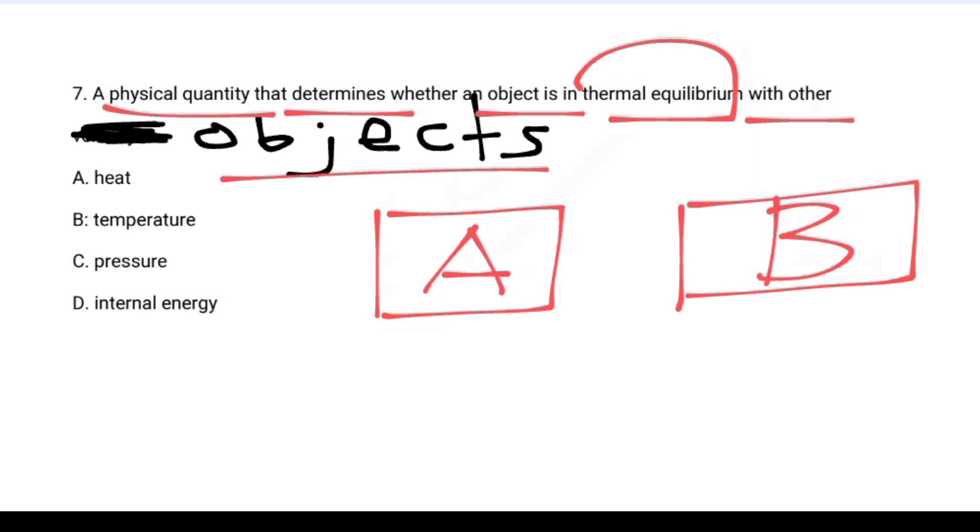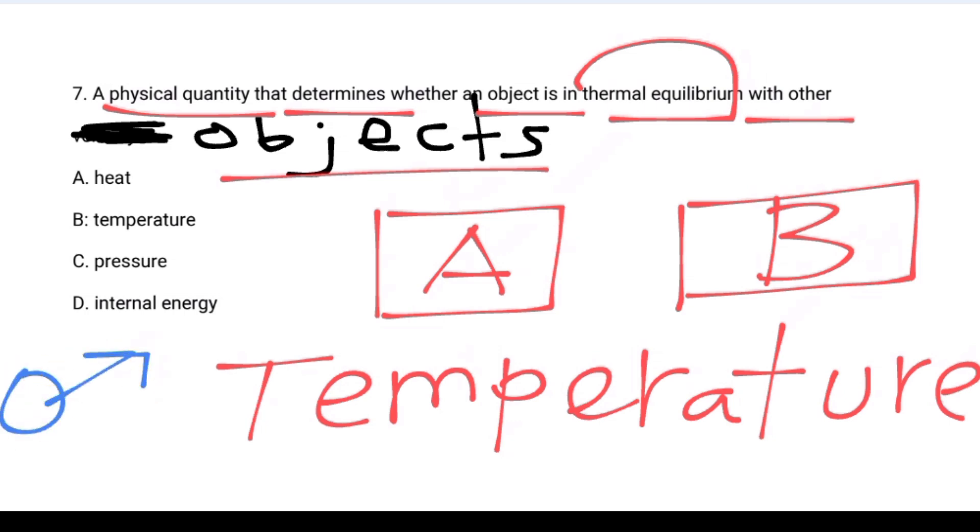What determines whether an object is in thermal equilibrium? Temperature. Temperature measures the random kinetic energy. Temperature is the physical quantity. This is a thermodynamics question. Now let's go to the other question.